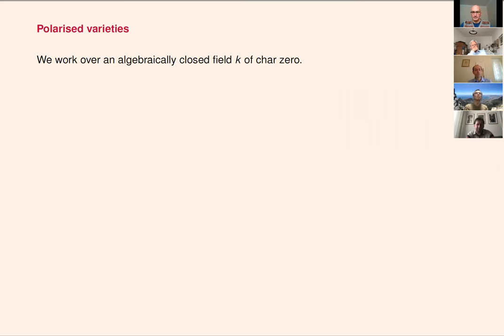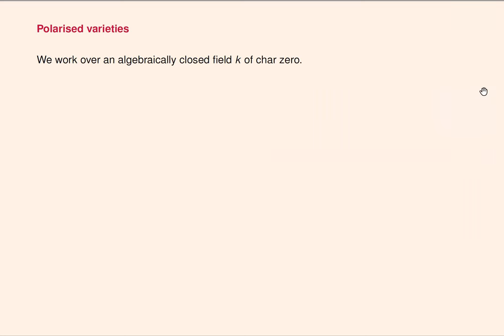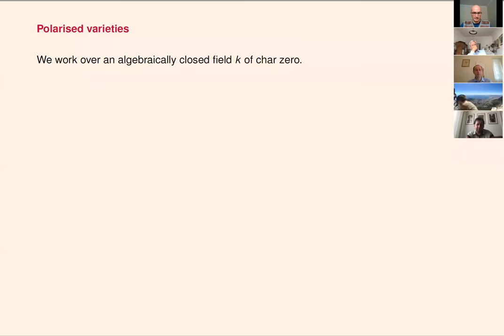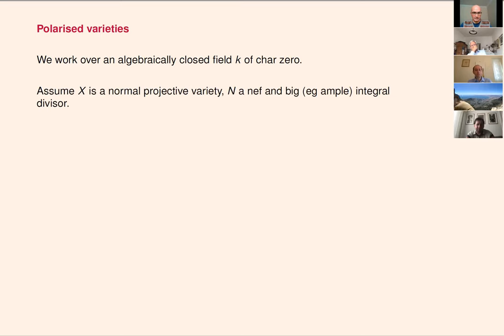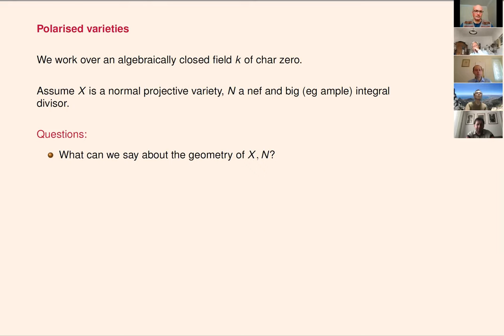Let me first tell you what I mean by a polarized variety. We will work over an algebraically closed field of characteristic zero — for example, the complex numbers — although many things will make sense over any characteristic, but as far as results are concerned we are for the moment limited to characteristic zero. Suppose we have a normal projective variety X, and N will be an nef and big, or if you like an ample, Weil divisor — integral divisor means all coefficients are integers. Given this setting, one can ask: what can we say about the geometry of this pair X and N?